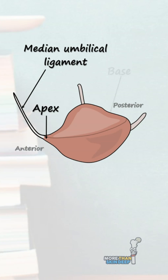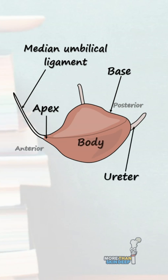And posteriorly is the base, which is triangular in shape and receives the two ureters at its superior corners. Between the apex and the base is the body of the bladder, and inferiorly is the neck, which goes on to become the urethra.